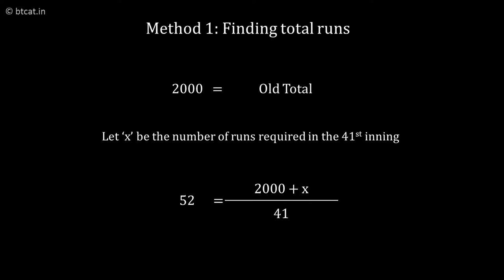If you do the calculation, the answer of x will be 52 into 41 minus 2000, and we will get our answer.